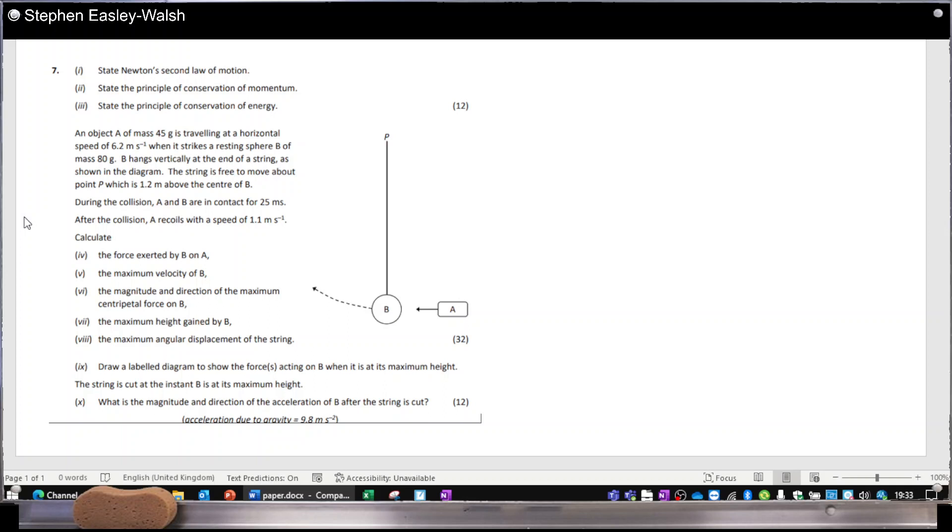And now on to the calculation, the meaty part of the question, 32 marks. An object A of mass 45 grams is traveling horizontally with speed 6.2 when it strikes sphere B of mass 80 grams hanging at the end of a string. The string is free to move about point P which is 1.2 meters above the center, so the radius, the length of the pendulum, the string is 1.2 meters. During the collision A and B are in contact for 25 milliseconds. After the collision A recoils with a speed of 1.1. Calculate the force exerted on B, exerted by B on A. So this is making use of our first definition which says that force is the rate of change of momentum per unit time.